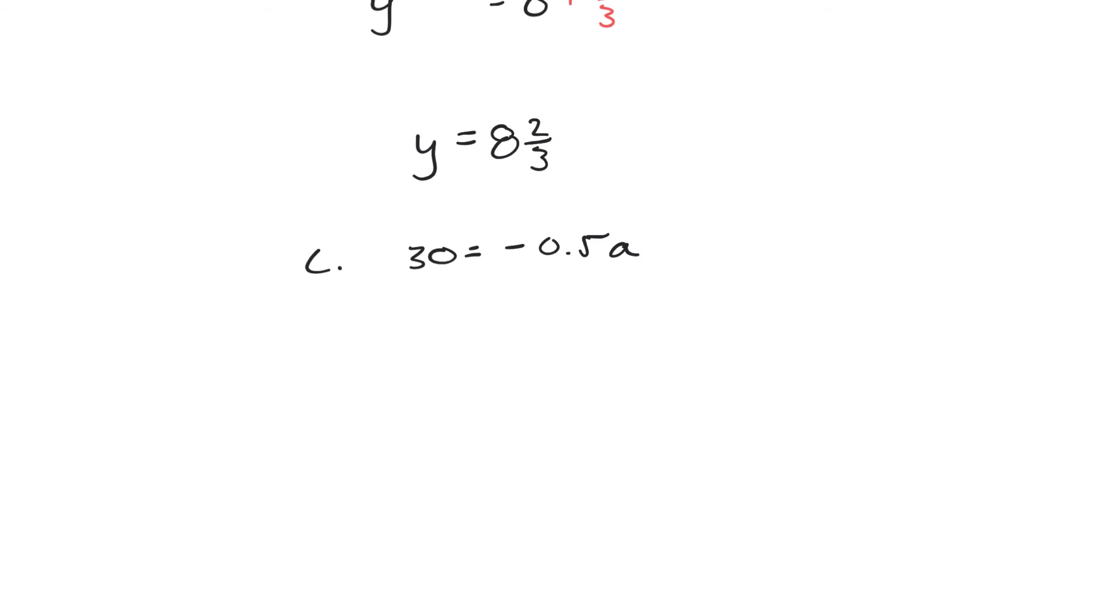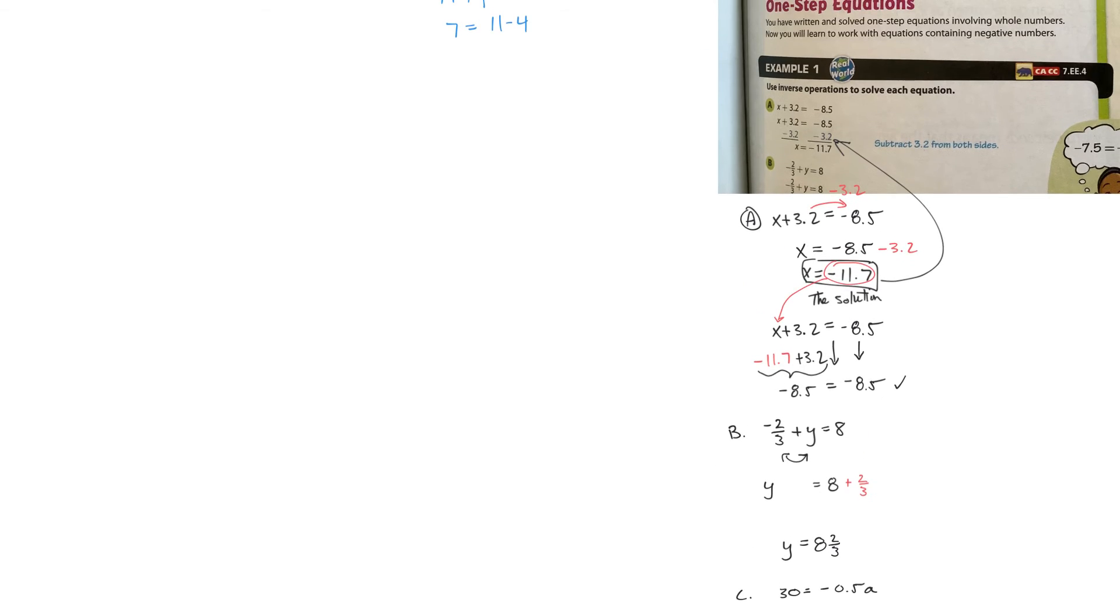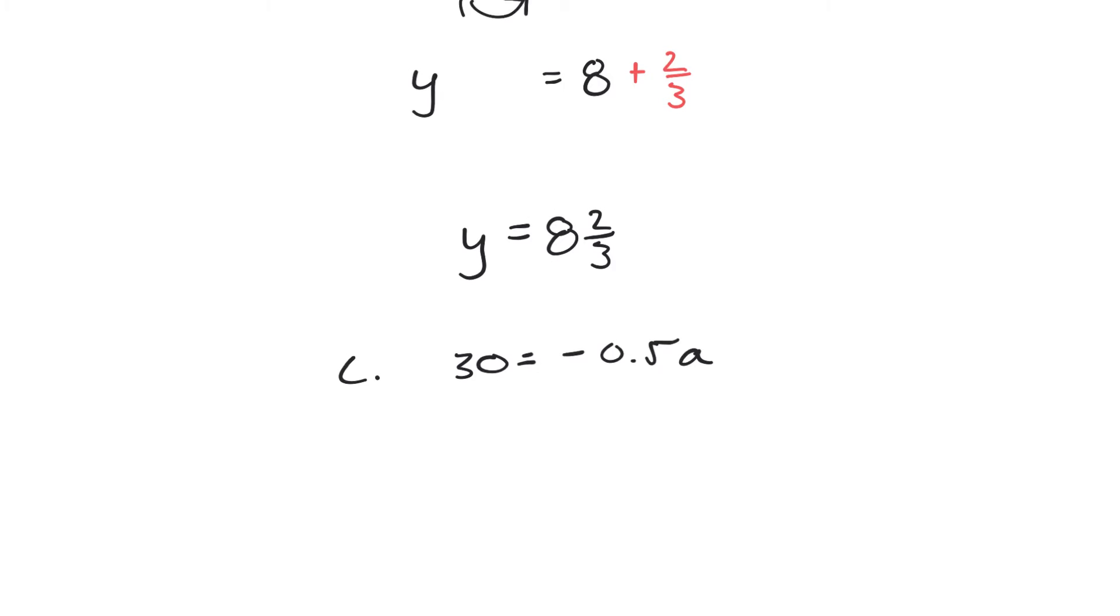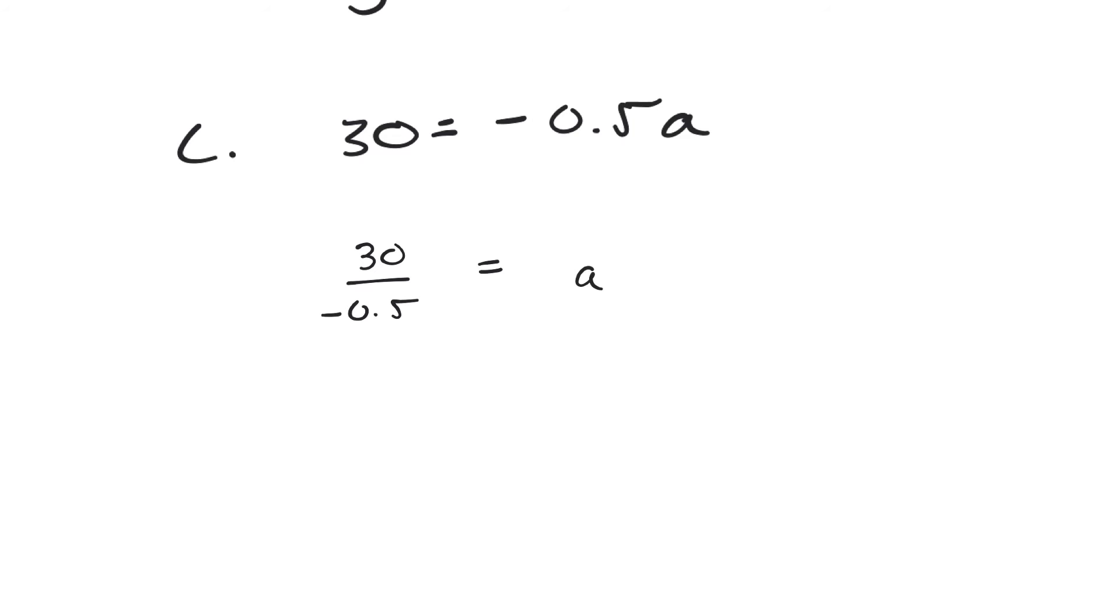And back in inverse operation land, where I showed you here, I said that the inverse operations are always used. So inverse of multiplication is division. And so, coming back to this here, I can see that this is negative 0.5 times a. So the inverse of multiplication is division. So then a is going to be 30 divided by negative 0.5. And when I divide that out, and you can throw it in a calculator, that won't matter so much.